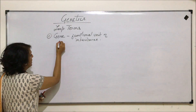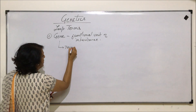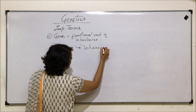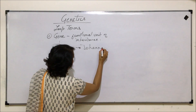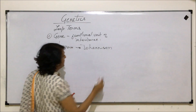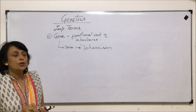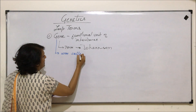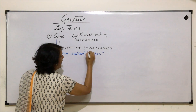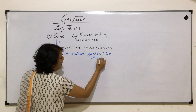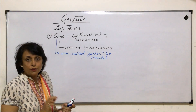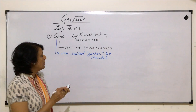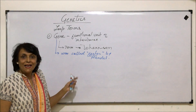This term gene was given by Johansson. Gene was originally called factor by Mendel. When Mendel was talking about this so-called thing which gets inherited, he did not use the term gene. He called it a factor. Later on, Johansson named it as gene.